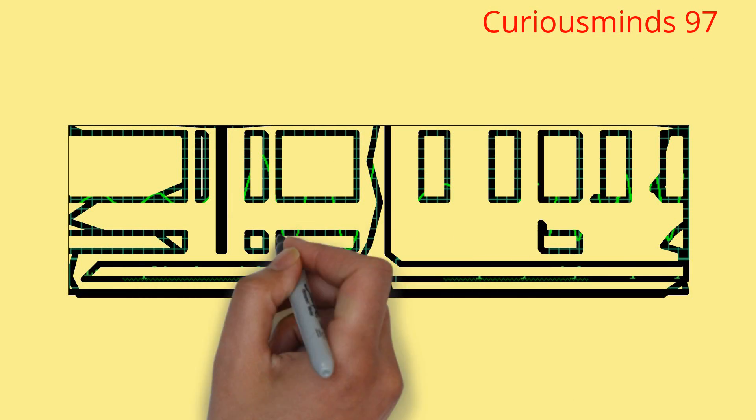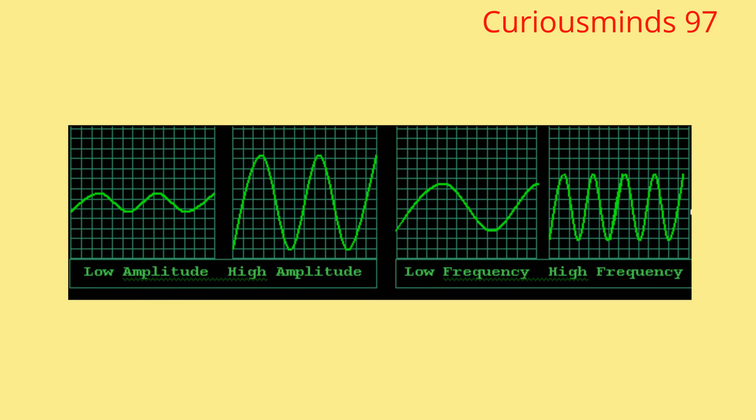The pitch of the sound depends upon the extent of vibration of the particles. Highly pitched sounds are produced by fast moving waves and lower pitch is produced by slow moving waves.